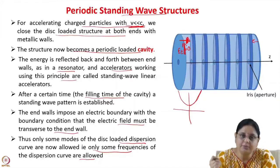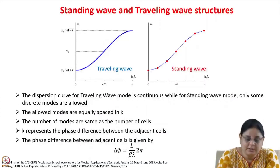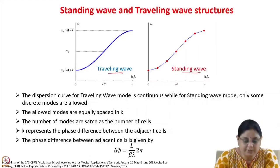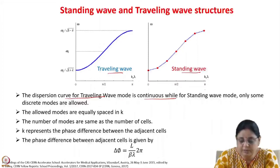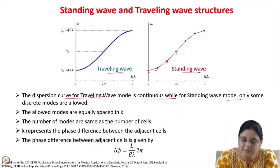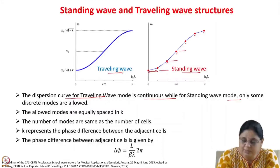Electromagnetic waves at any other frequency will be reflected back. So this is the dispersion curve for the traveling wave — it is continuous — while for the standing wave mode, only certain discrete frequencies are allowed. These allowed modes are equally spaced in K.